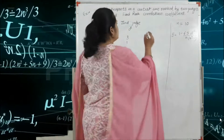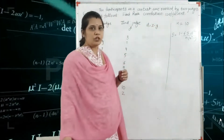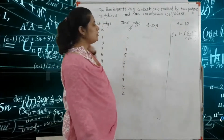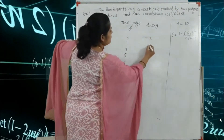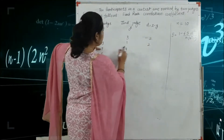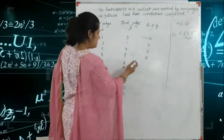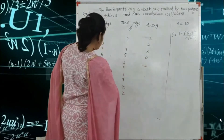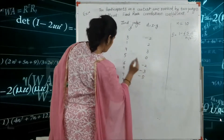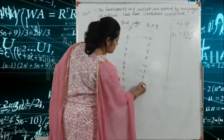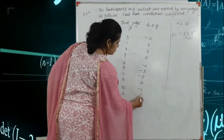So d = x minus y. Computing each value: 1 minus 3 = minus 2; 3 minus 1 = plus 2; 7 minus 4 = 3; 5 minus 5 = 0; 4 minus 6 = minus 2; 6 minus 9 = minus 3; 2 minus 7 = minus 5; 10 minus 8 = 2; 9 minus 10 = minus 1; and 8 minus 2 = 6. These are the values of d.